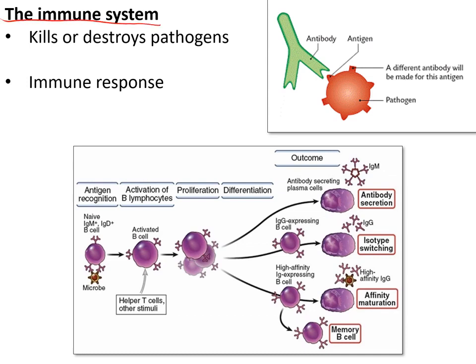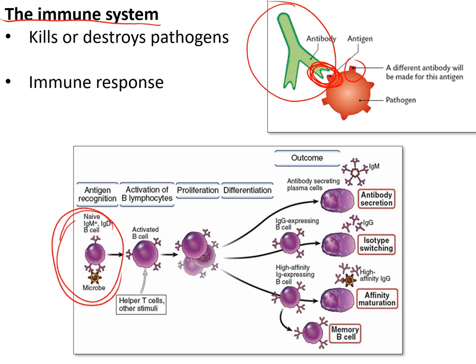The immune system destroys pathogens using antigens — chemical markers on the surface of a pathogen. We make antibodies that match specific antigens to kill the pathogen. Antibodies are made by lymphocytes: when infected, the lymphocyte with the right antibody shape gets activated and makes many copies, flooding the body with the correct antibodies. Some remain as memory lymphocytes after infection, so next time the same pathogen is encountered, antibodies are produced rapidly before it affects us again.